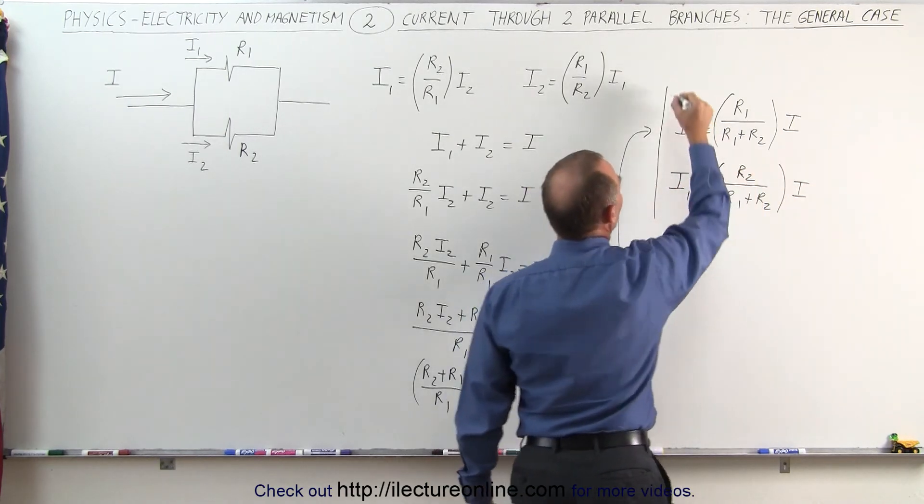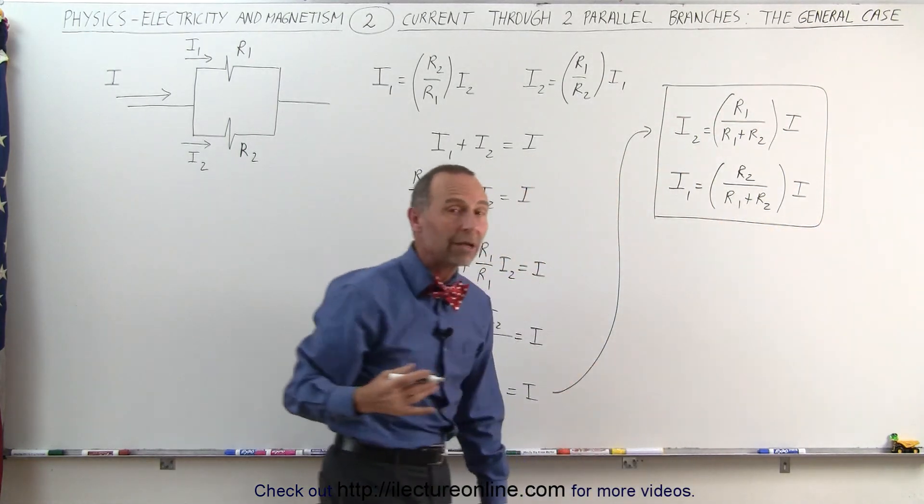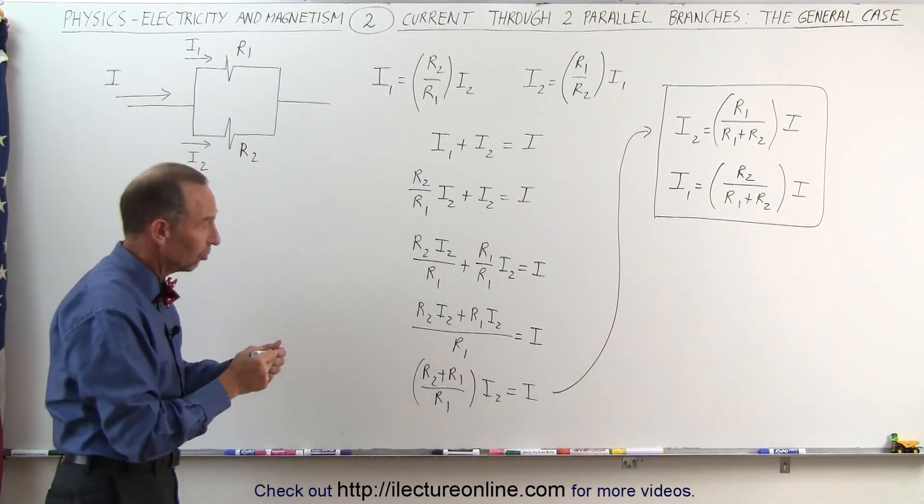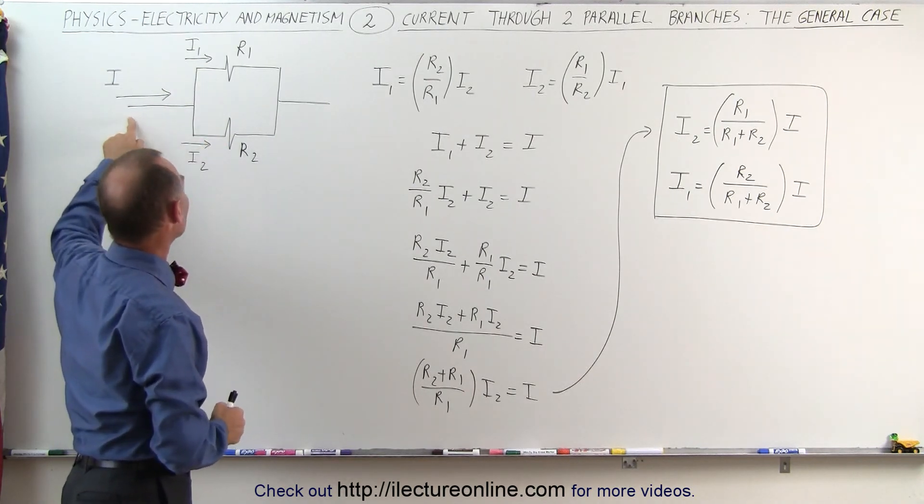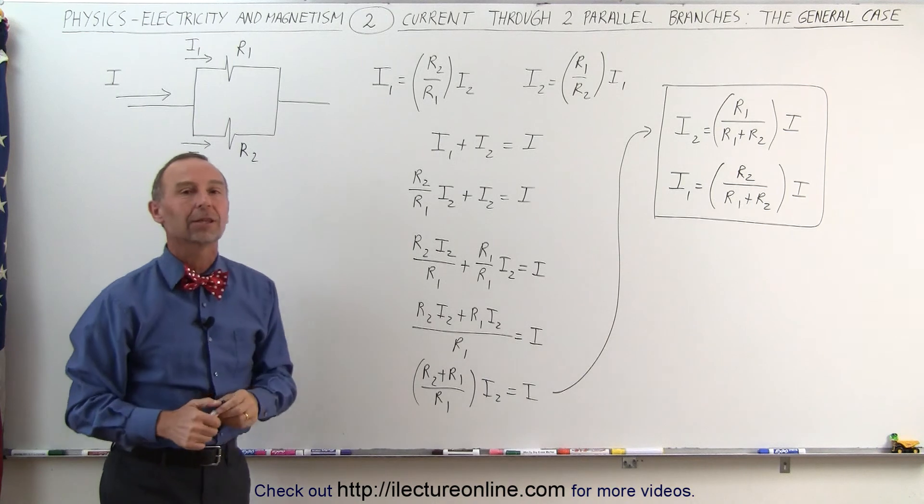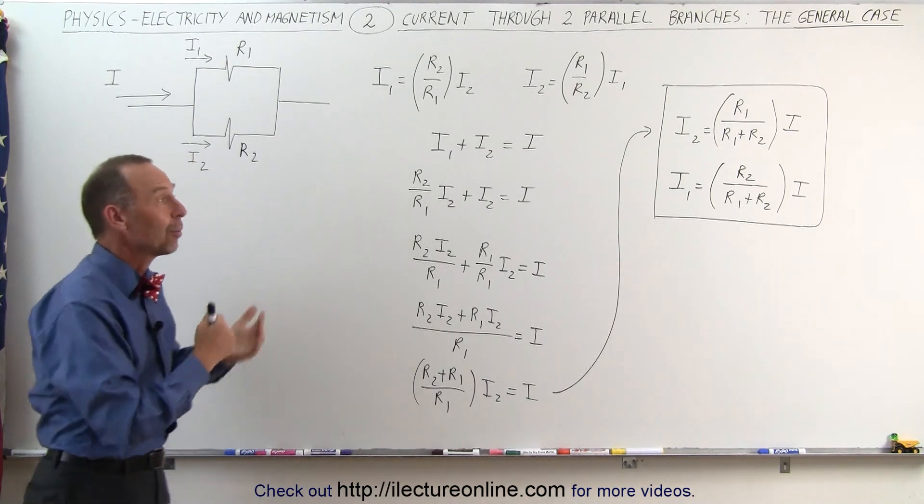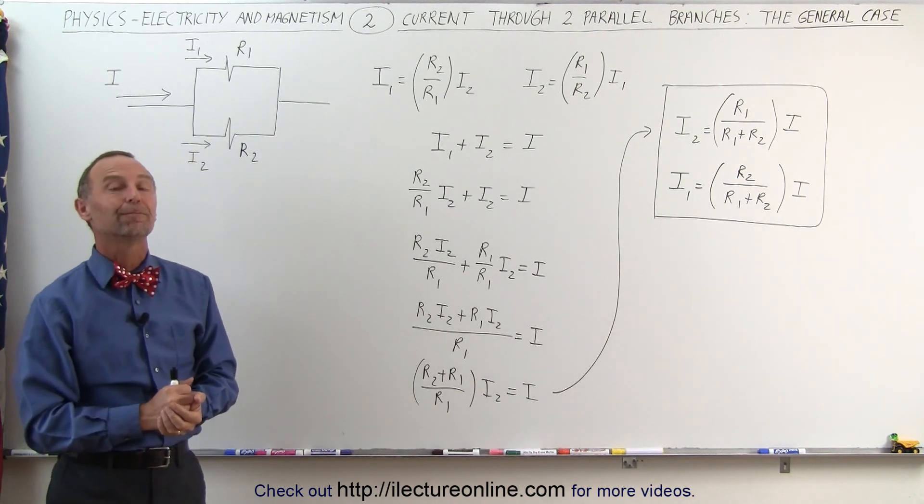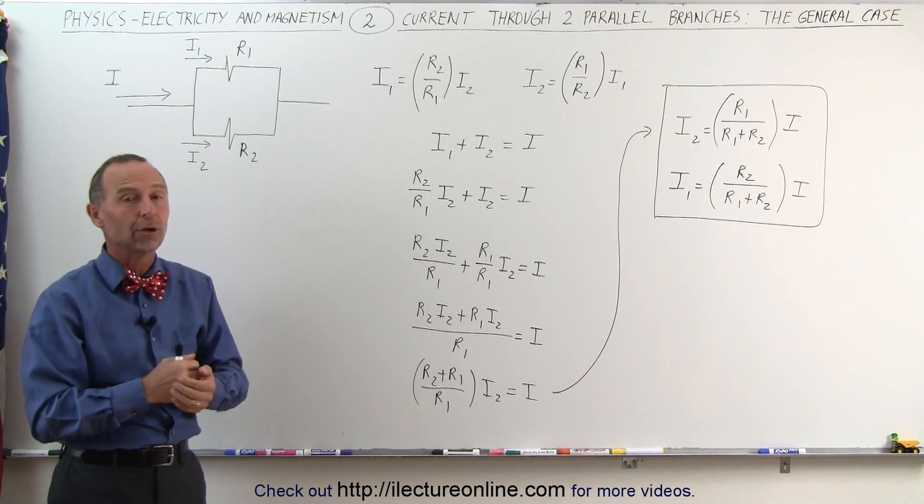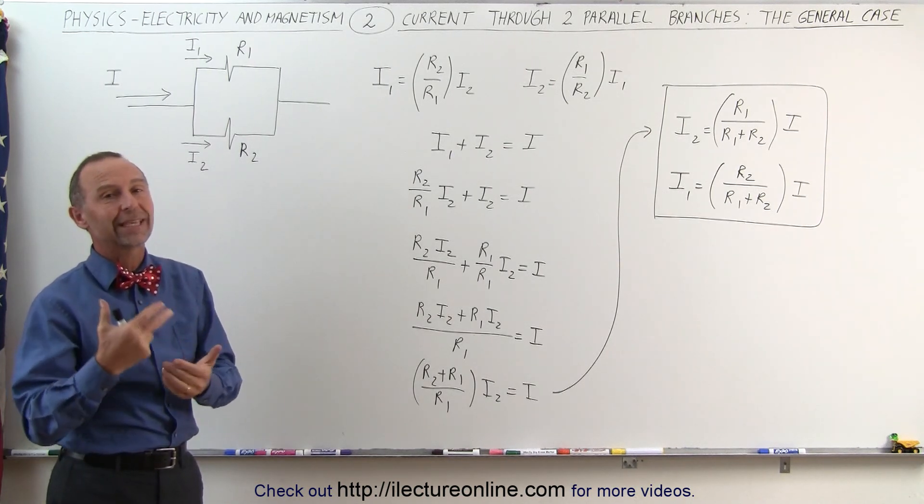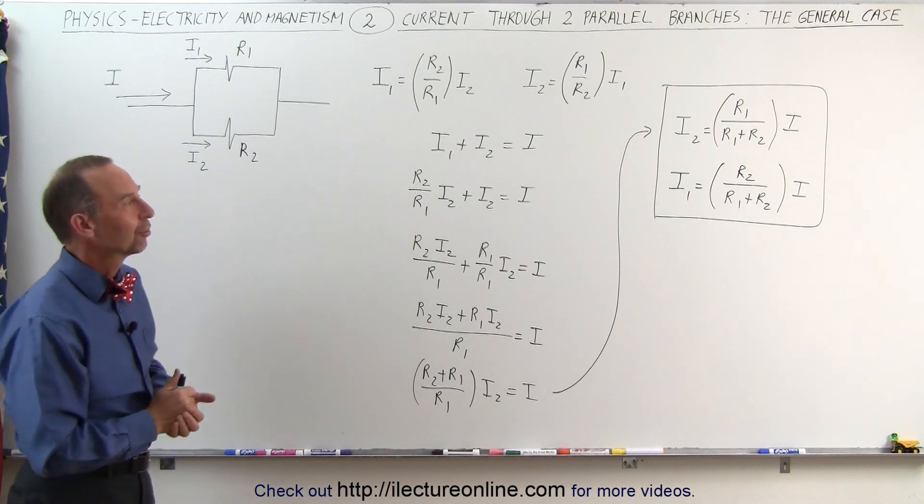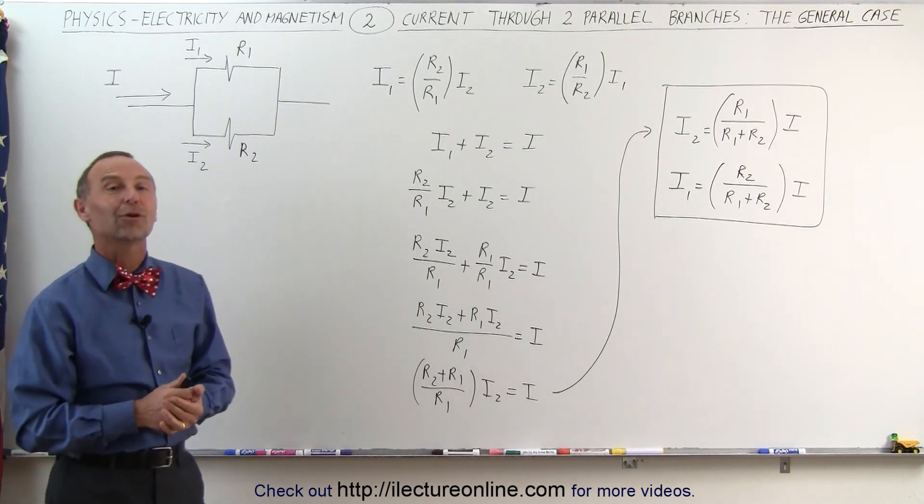And this is how you calculate the current through each of the branches if you have two parallel branches, if you know the resistance of both branches, and then in terms, of course, of the total current entering the branch point. And that's how we calculate the general case. On the next video, we'll show you an example of how to utilize this. And finally, we'll show you the case of three parallel circuits. So stay tuned and we'll show you the next example.